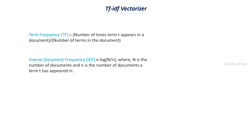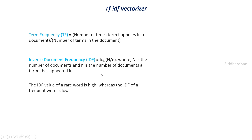IDF stands for inverse document frequency, and the formula for this is log(N/n), where capital N is the total number of documents and small n is the number of documents a term T has appeared in. The IDF value of a rare word is high, whereas the IDF of a frequent word is low.